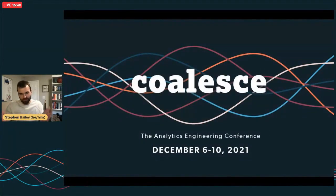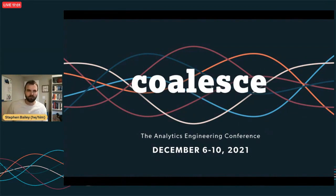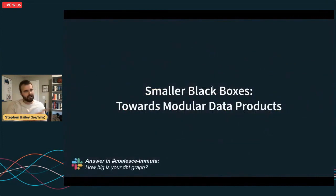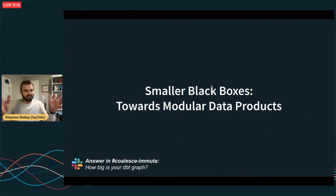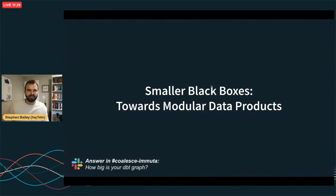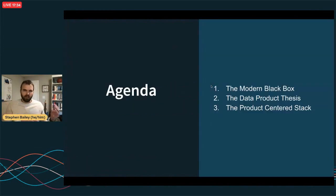Alright. Thank you, everybody, for bearing with the outage and for joining me today. I'm really excited to share the content of this talk. It's a topic I'm passionate about, and that we at Immuta have learned a lot about over the past year as we've started to think about it more rigorously. I'm going to have some Slack prompts throughout and would love for you to hop in and provide your opinions. To start: just how big is your dbt graph? Is it in the tens, hundreds, or thousands of nodes?